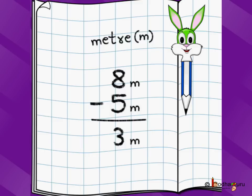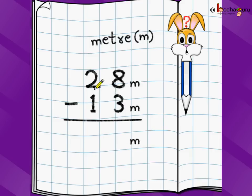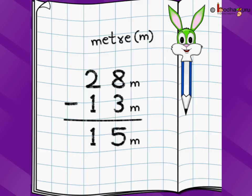It's like a simple single digit subtraction problem. The only thing is there is a unit of measurement which we keep consistent — meter here, meter here. Let's take another problem with a little larger number. 28 meter minus 13 meter. Just like any other two-digit subtraction, we write the ones position below ones position and the tens position below tens position. 28 meter minus 13 meter — 8 minus 3 is 5, 2 minus 1 is 1. So the answer is 15 meters.